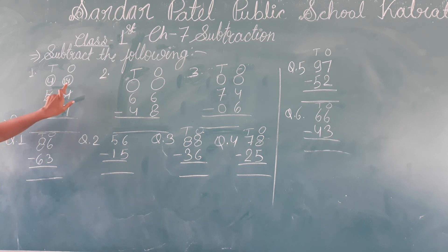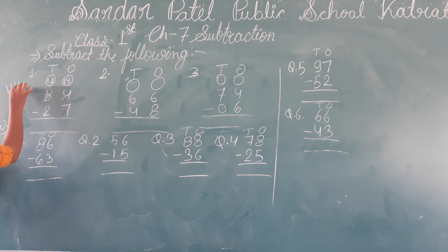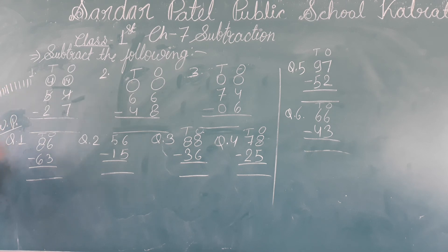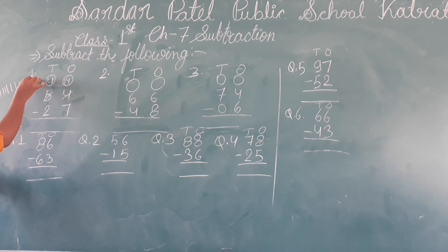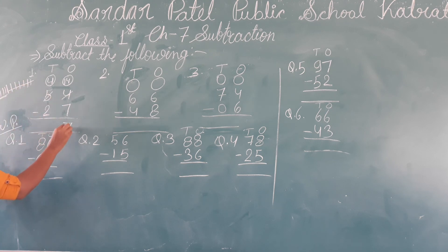We will minus 7 from 14. 14 minus 7 — we will not do just 4 because this is why we have borrowed. So 14 minus 7: counting from 14 back 7 steps — 13, 12, 11, 10, 9, 8, 7 — the answer is 7. We cut 7 from 14 and count: 1, 2, 3, 4, 5, 6, 7. So the ones place answer is 7.